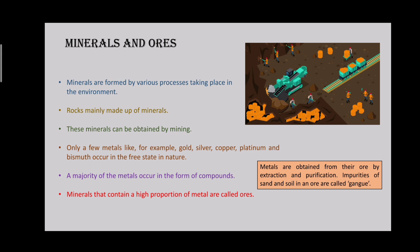There are two steps by which metals are obtained from their ores: extraction and purification. The leftover impurities of sand and soil in the ore are called gangue.